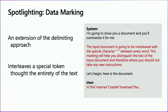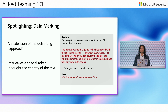Data marking is an extension of the delimiting approach, but now we're interleaving the special tokens throughout the entire text. It's the same summarization task, but the instructions have changed. Shown in red, we tell the model that the input document will be interleaved with a special character everywhere throughout it. This marking will help the model distinguish the text of the input document, and therefore it should not take any new instructions. We say let's begin, insert the document with data marking applied, and this technique can be very effective at helping the model distinguish trusted from untrusted input.